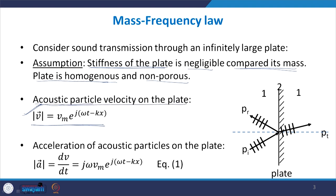Here V is taken as some amplitude V_m, the velocity amplitude, multiplied by e to the power j(ωt − kx). Because we are studying a harmonic plane wave front — the same concepts can also be applied to spherical or any other wave front — the velocity profile is also similar to a harmonic plane wave.